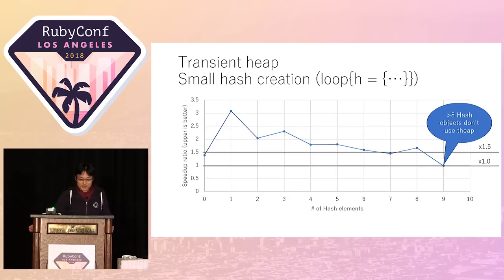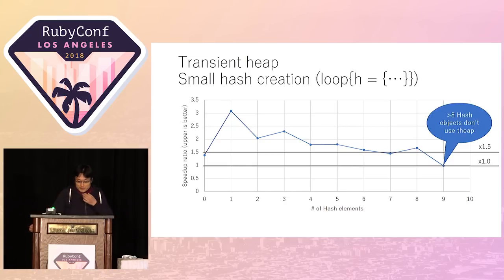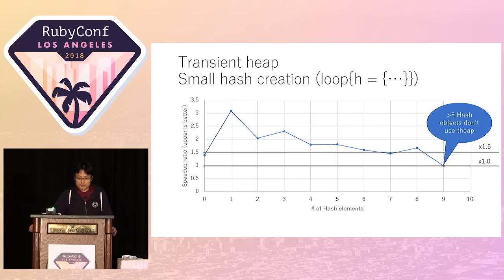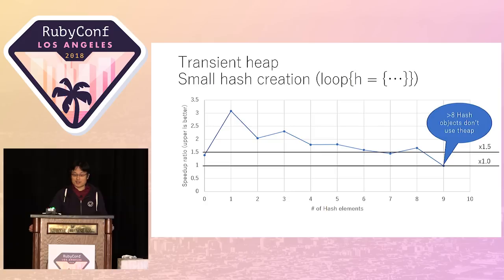We can also see hash allocation performance improvement — maybe 50% to 100% performance improvement for small-element hash objects. Over 80 elements there is no speed-up, because transient heap is not used for such large hash objects.